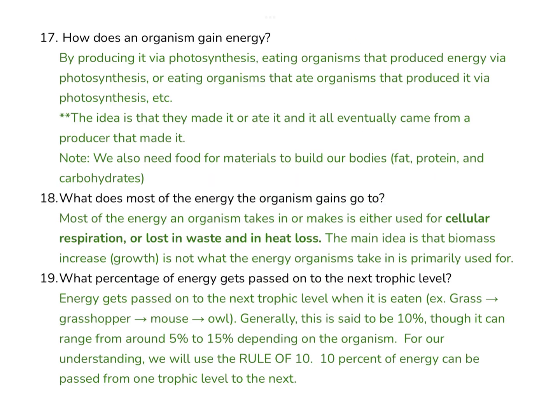How does an organism gain energy? It does so by photosynthesis, or by eating organisms that already did photosynthesis, or by eating an organism that consumed an organism that did photosynthesis. The idea is that the organism either made energy using sunlight — converting CO2 and water into glucose — or by eating an organism that is made up of glucose. We also need food for materials to build our bodies, so we need fat, protein, and carbohydrates in our diet.